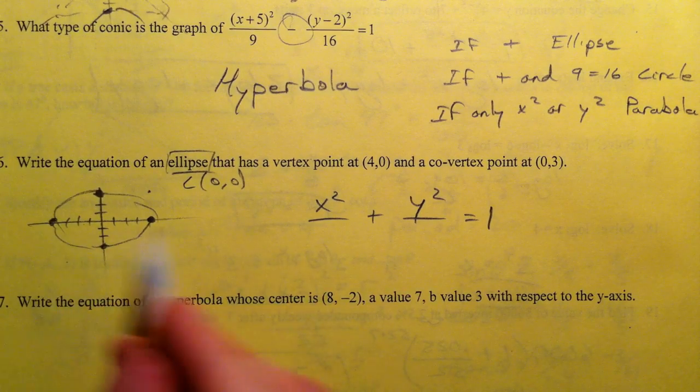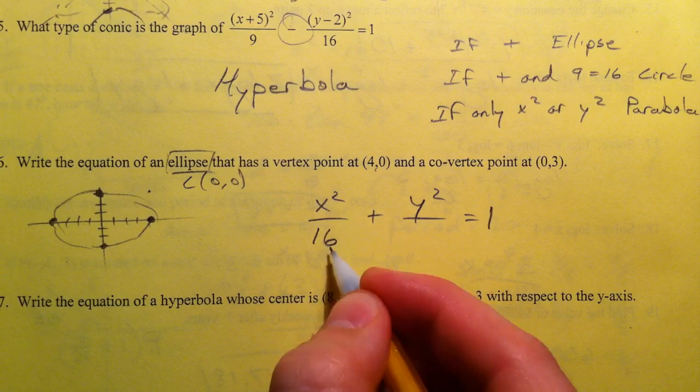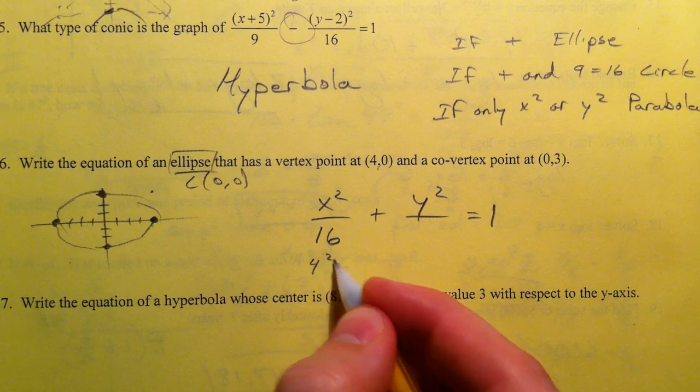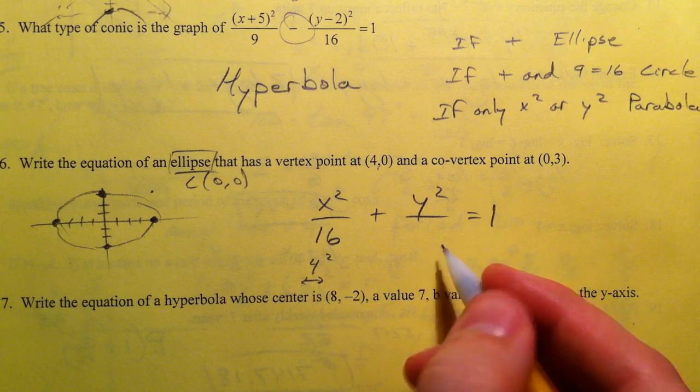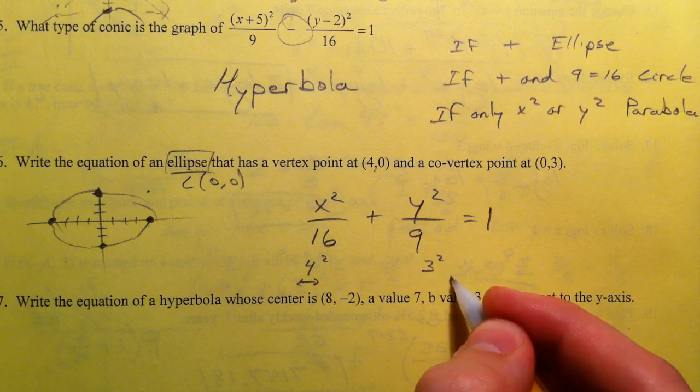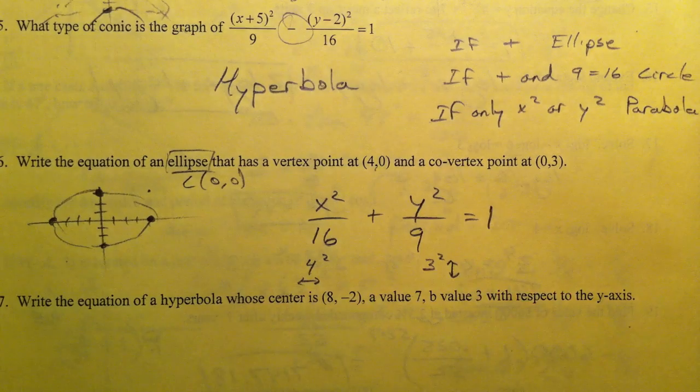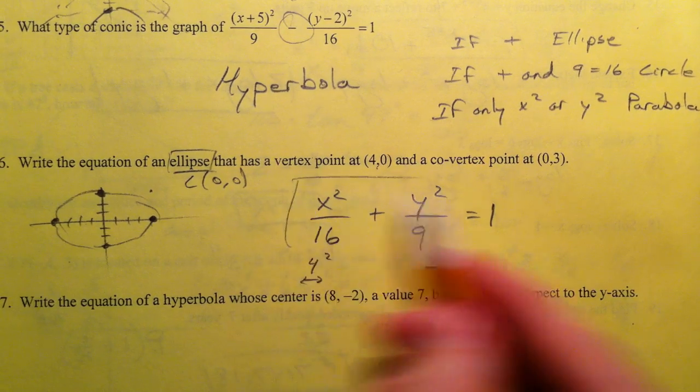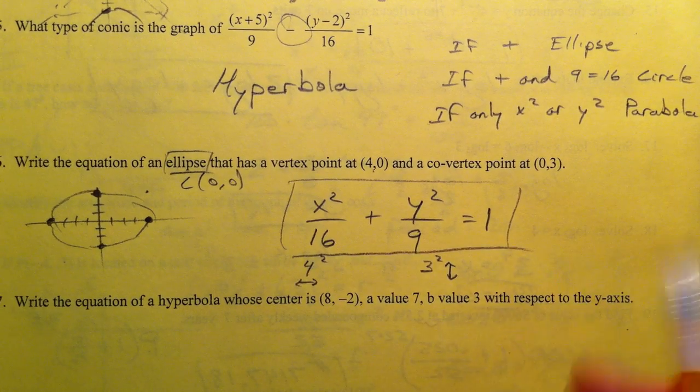And so because we went left and right 4, 16 is going to go underneath the x because 4 squared was left and right, and because we went up and down 3, 9 is going to go because we went up and down 3, and that is our ellipse equation.